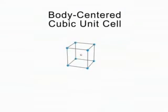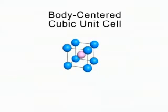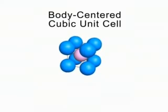The body-centered cubic unit cell has a particle at each corner and one in the center, which is colored pink to make it easier to see.